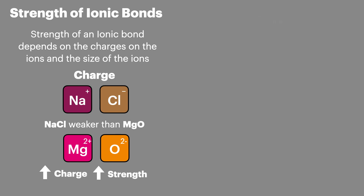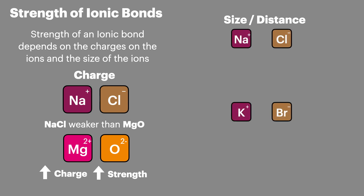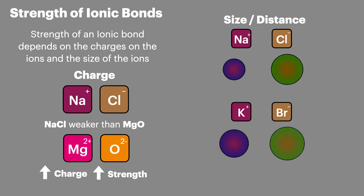The size of the ion has an impact on the distance between the ions and the length of the ionic bond. Comparing sodium chloride with potassium bromide: potassium is bigger than sodium and bromine is bigger than chlorine, and the bonding is stronger in sodium chloride than in potassium bromide. This is because the distance between the ions is greater in potassium bromide. So as the size of the ion increases, the strength of the ionic bond decreases.